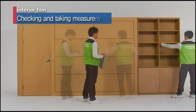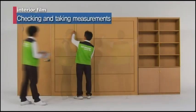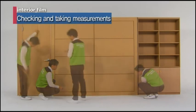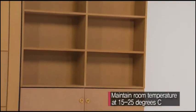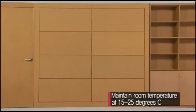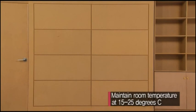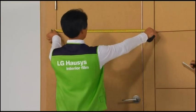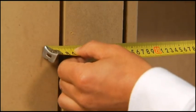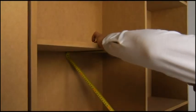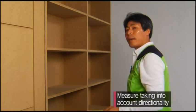The process begins by checking the adhesive surface and taking measurements. The room temperature must be maintained at 15 to 25 degrees Celsius, the ideal temperature for adhesion of the interior film. When measuring the adhesive surface, you must remove all obstructions and be sure to take into account its direction.